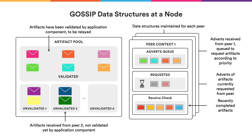Here we see what data structures a node holds for gossip. On the left is the artifact pool, separated into validated and unvalidated sections. The unvalidated section is separated per peer to ensure each peer has its own quota and to prevent resource leaks and denial-of-service attacks by bad peers. In addition, for each peer we maintain its context, which tracks which adverts we received, which adverts we requested, and from whom. The adverts queue is a priority queue of all adverts received from that peer, ordered by priority. The requested set contains all adverts for which the corresponding artifacts were already requested from that peer. The received check cache is used to prevent requesting adverts that were recently completed.